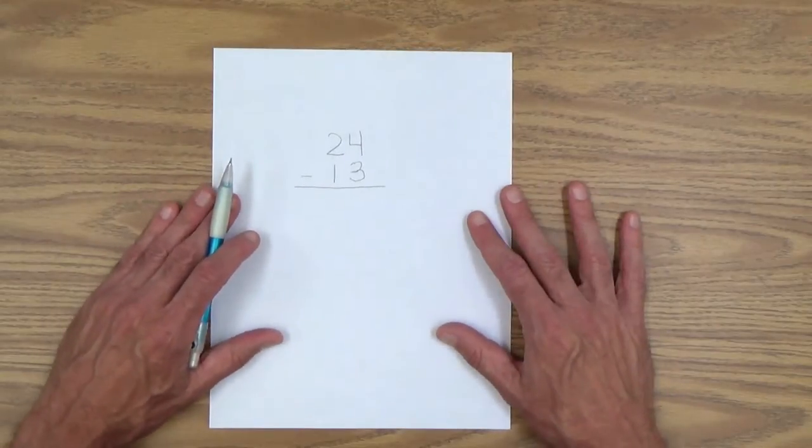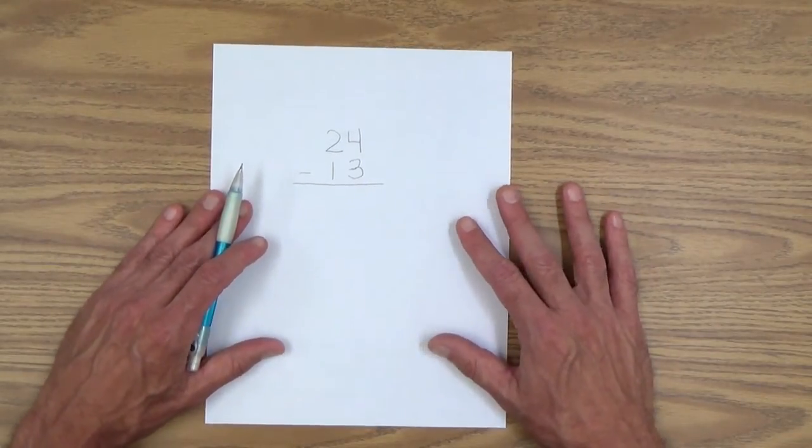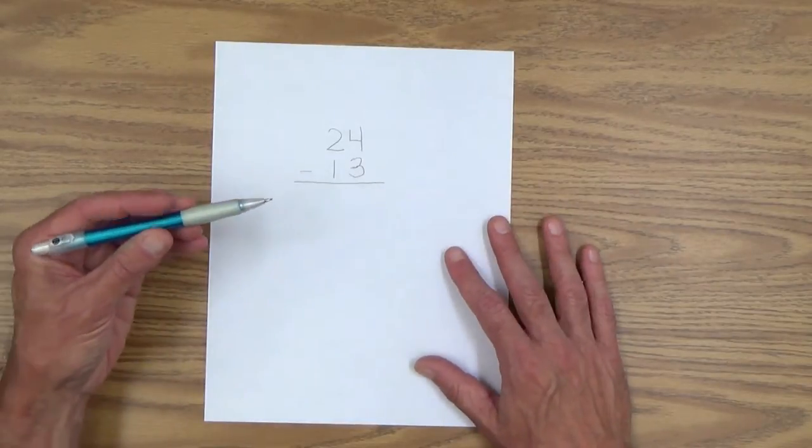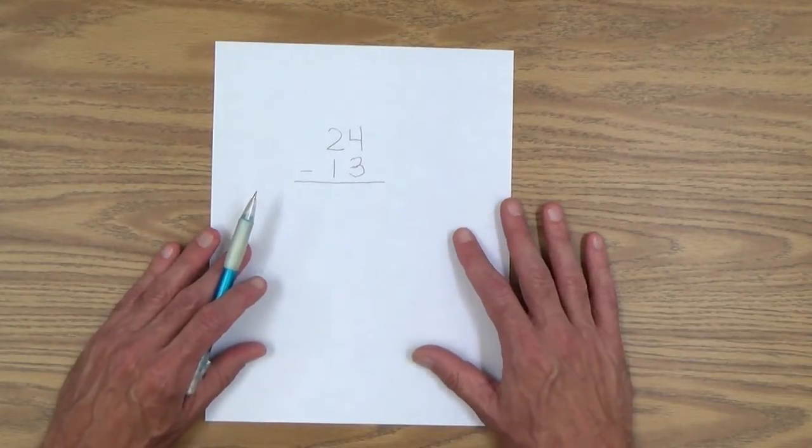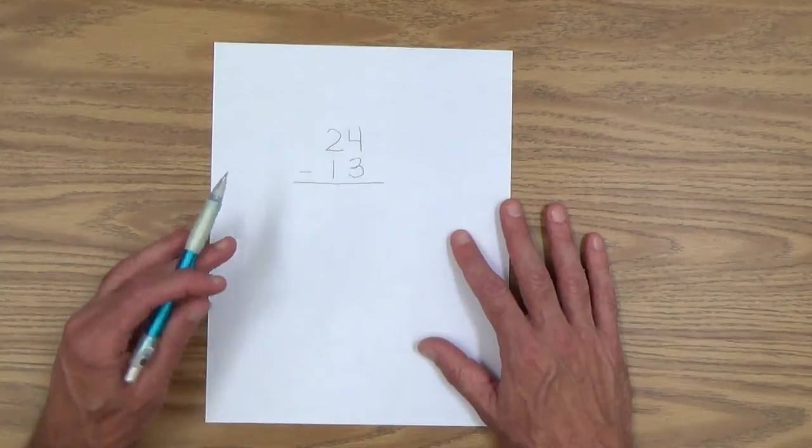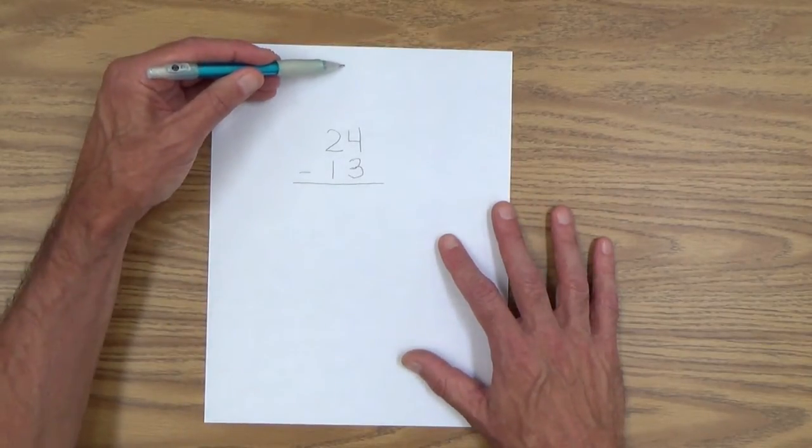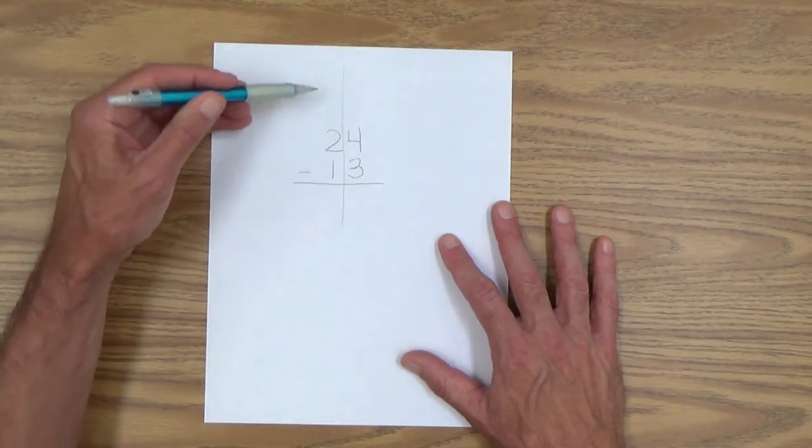24 minus 13 equals how many? And of course, you're modeling the activity for your child for starters. And what you're going to do, the same thing you did when you worked with two-digit numbers in addition, you're going to give her a little help.